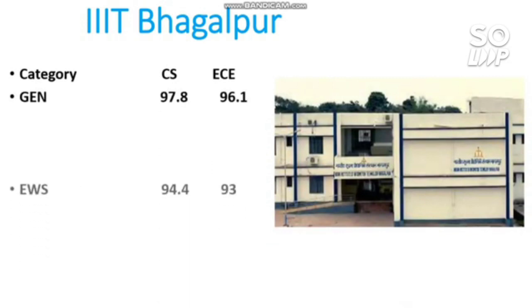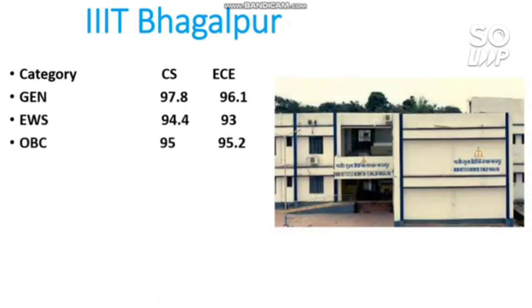Continuing IIIT Bhagalpur: OBC requires 95 and 95.2. SC requires 75 and 72 percentile. ST requires 70 and 65 to 67 percentile to get into this IIIT.